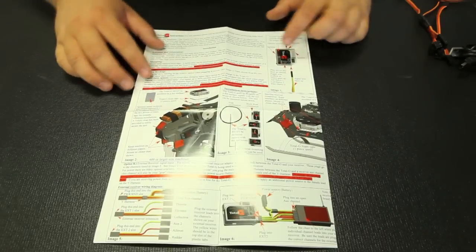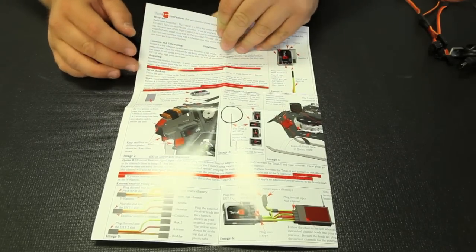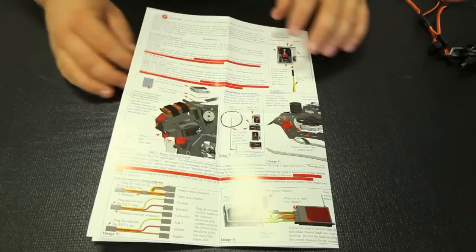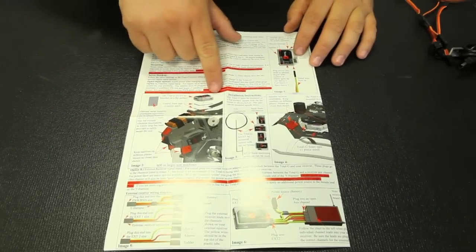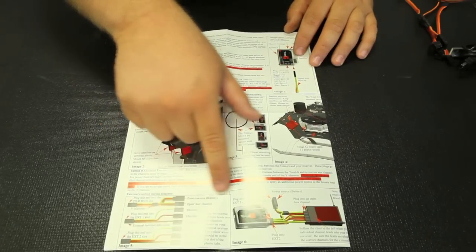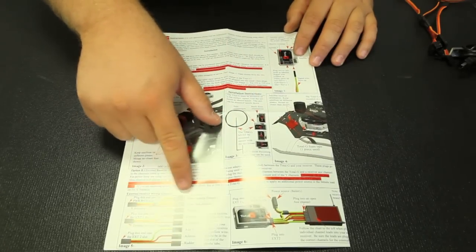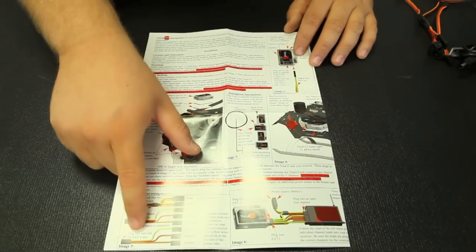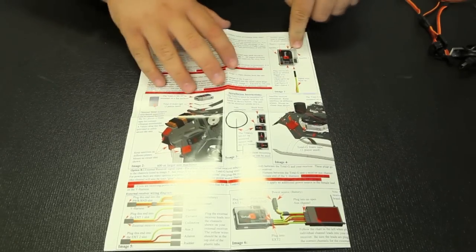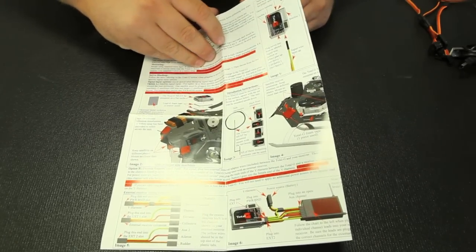Okay, we've got the manual opened up here. As you can see, it's a simple one-page manual with a lot of information in there. Basically, it tells you right here, it tells you how to mount the Total-G to your helicopter. It goes into a little more detail about using remote receivers and where each wire goes. Basically, how to connect to the unit. And we'll open the manual up a little further here.